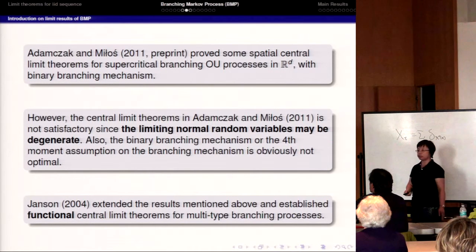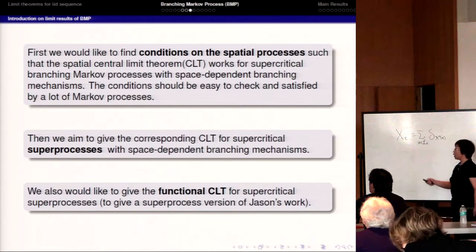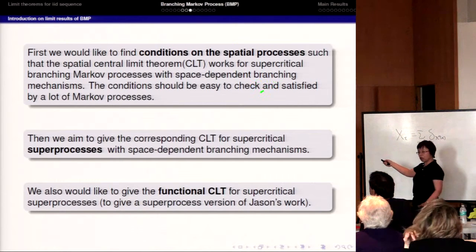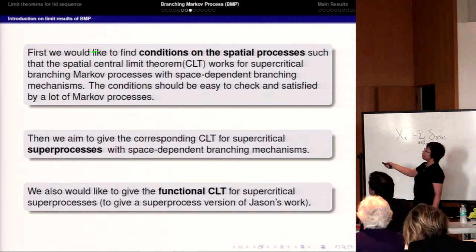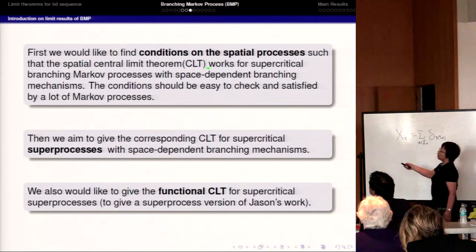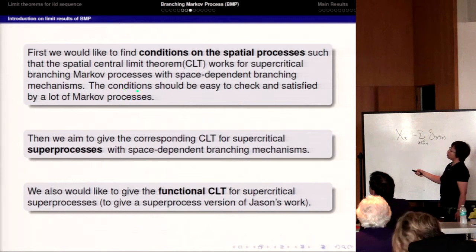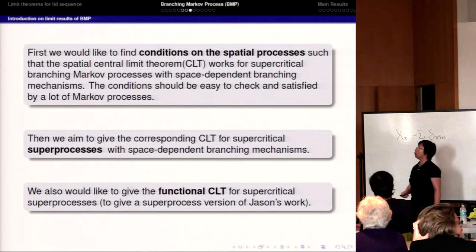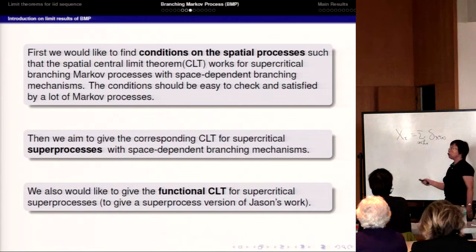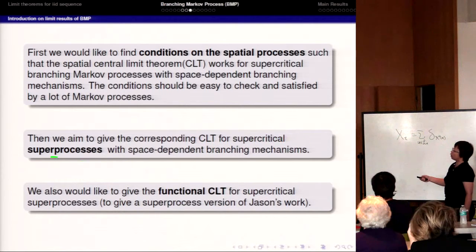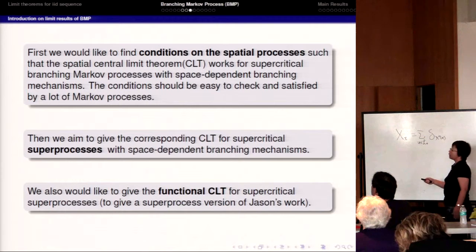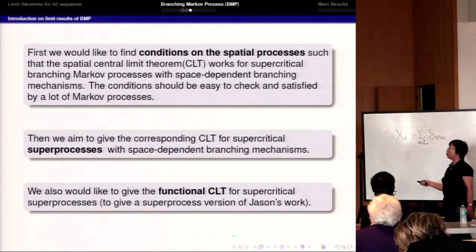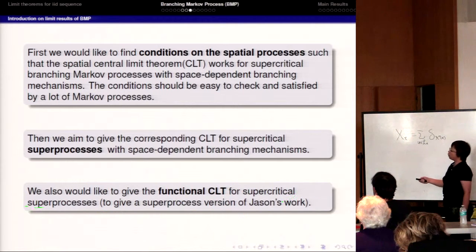Based on these papers, we formulate our goals. First, we want to find conditions on the spatial Hunt process such that we can establish the central limit theorem — conditions which are easy to check and yield many examples. The second goal is to establish the CLT for supercritical superprocesses. The third goal is to give the functional form of the CLT for supercritical superprocesses.